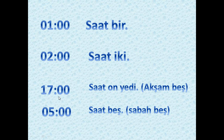For PM you can say 'saat on yedi', which means it's seventeen o'clock. Or you can say 'akşam beş' — 'akşam' means evening — and this one is more like the digital time reading. So we can say five o'clock as 'saat beş', 'akşam beş', or 'saat on yedi'. For AM we say 'saat beş', and it usually means 'sabah beş' — morning five.